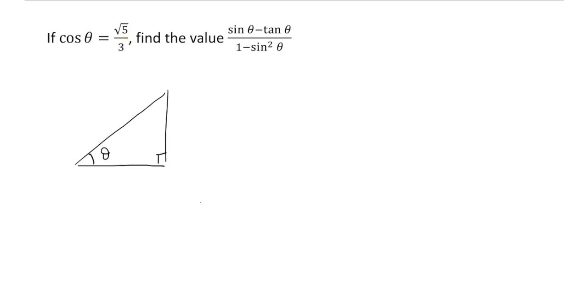So if we do that, adjacent here is going to be root 5. Hypotenuse is going to be 3. So if we want to calculate sine or tan, we're going to need to know this side length, the opposite side length. So again, I'm going to call that x.